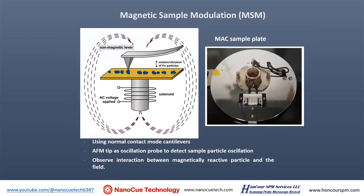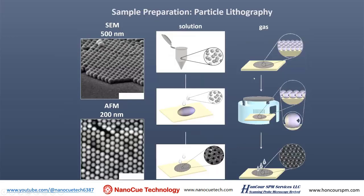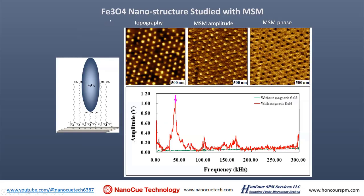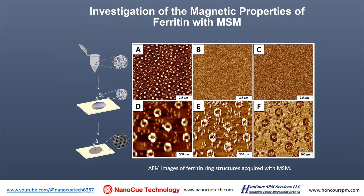Here's the magnetic sample coil setup and the results of iron oxide imaging. The upper right image is the MSM phase image, and you can see the magnetic particles being oscillated by the coil. Ferritin samples can also show a very strong magnetic response because ferritin has an iron core. It's an interesting way of using an existing instrument to invent something new — magnetic sample modulation.